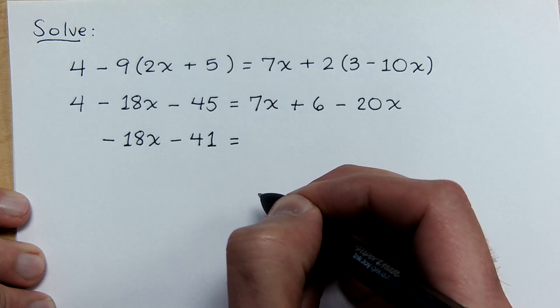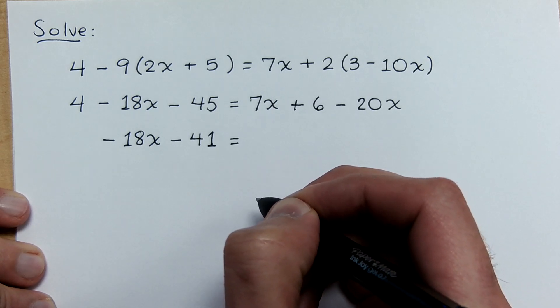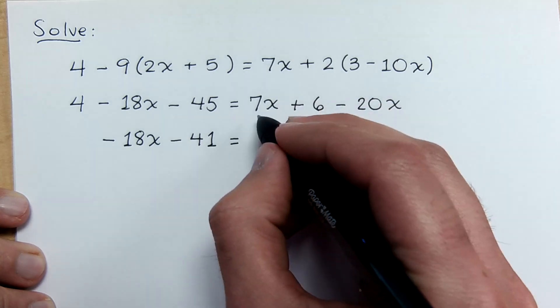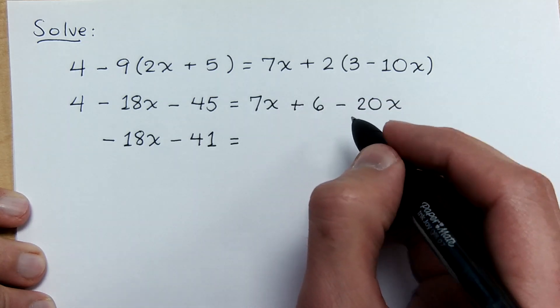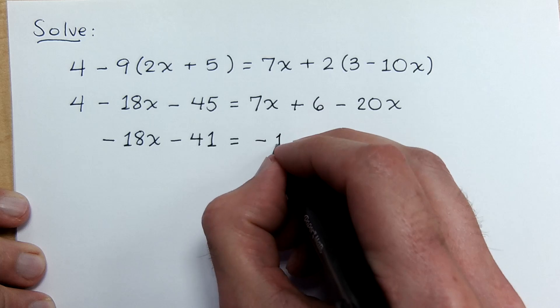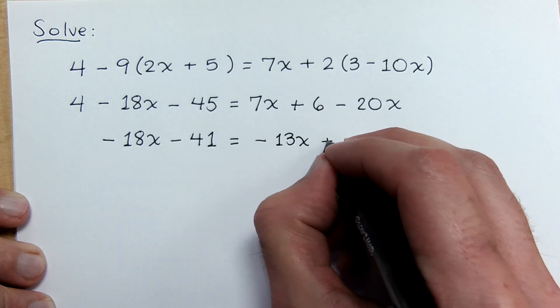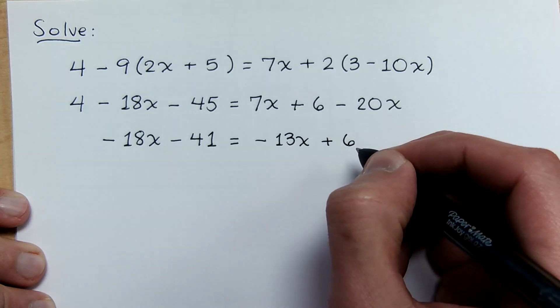On the right side, what are your like terms? 7x and minus 20x. That's right. That's negative 13x plus 6.